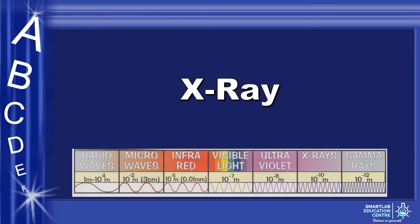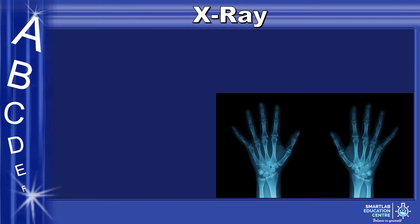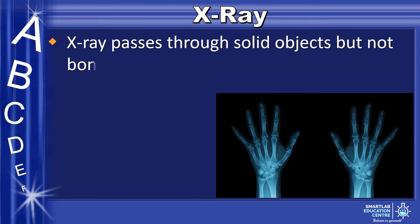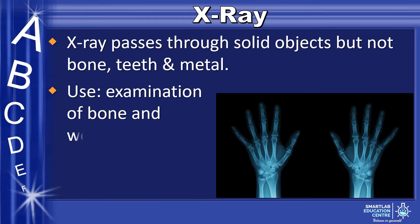Next, X-ray. X-ray passes through solid objects but not bone, teeth, and metal. It is used to examine bones and welded joints.